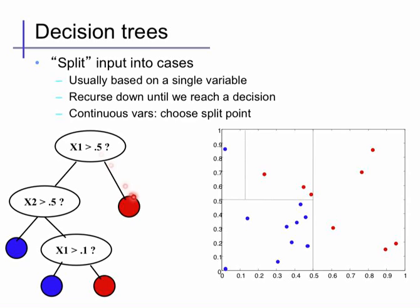I'll draw true values going to the right and false values going to the left. For example, this decision tree corresponds to a function that outputs class red if feature 1 is greater than 0.5. If it compares to less than 0.5, we move to another decision node, where we compare feature 2 to another threshold, say in this case 0.5 again.